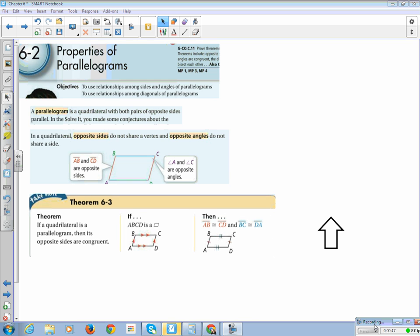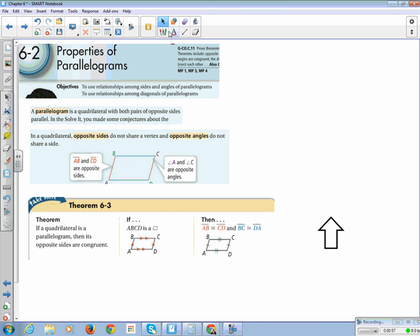When we look at our theorem 6-3, if a quadrilateral is a parallelogram, then its opposite sides are congruent. So, if I were writing this down, I would definitely highlight this part here. AB and CD are congruent, and BC and AB are congruent. That's just a property of parallelograms. In a parallelogram, the opposite sides are parallel.